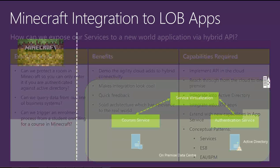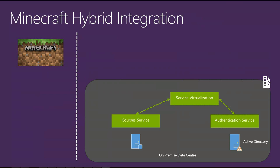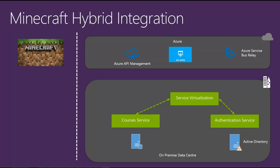For the first scenario, I've got an authentication service that is a custom service on top of Active Directory, and we've got a service virtualization component. The problem is Minecraft is outside the corporate domain — so how do we hook these things together? I used Azure Service Bus Relay, and we had an API hosted in Azure that Minecraft would consume. We also put Azure API Management in front of that, giving a nice rich experience for APIs. Once we get through the relay into our virtualization component, we can route messages to whatever service we need.